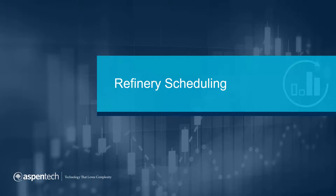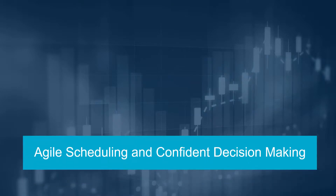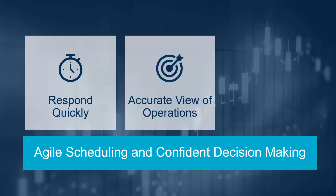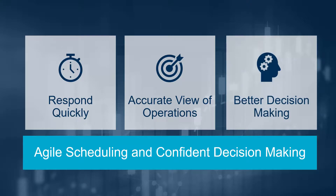Agile refinery scheduling enables refiners to make confident scheduling decisions. The refining industry is anything but predictable, and with refinery scheduling software, companies can collaborate and respond to disruptions quickly, while having an accurate view of operations to make better scheduling decisions.